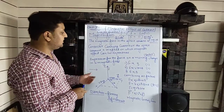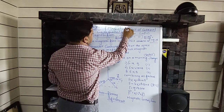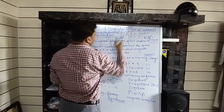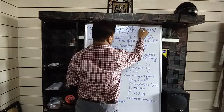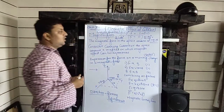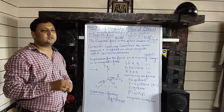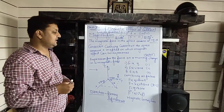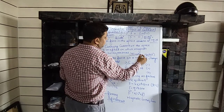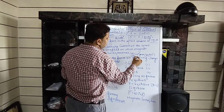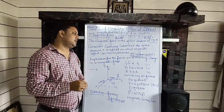The compass needle's north pole tells you the direction of the magnetic field. The unit of magnetic field is Tesla. The SI unit is Tesla, and the CGS unit is Gauss. 1 Tesla = 10⁴ Gauss, which means 1 Gauss = 10⁻⁴ Tesla.